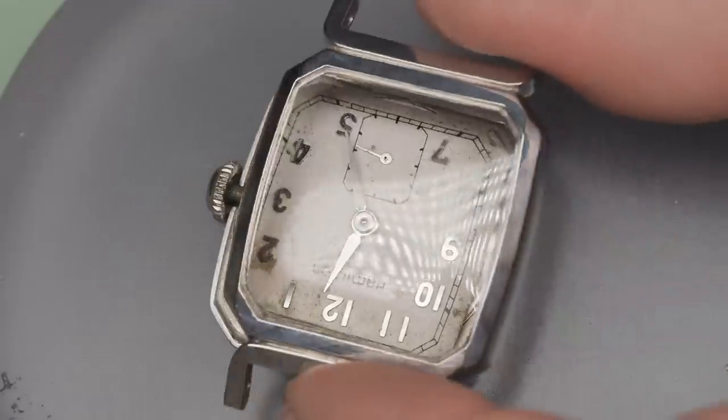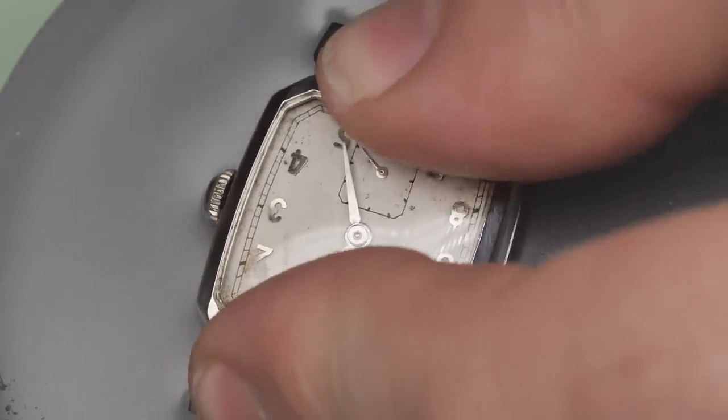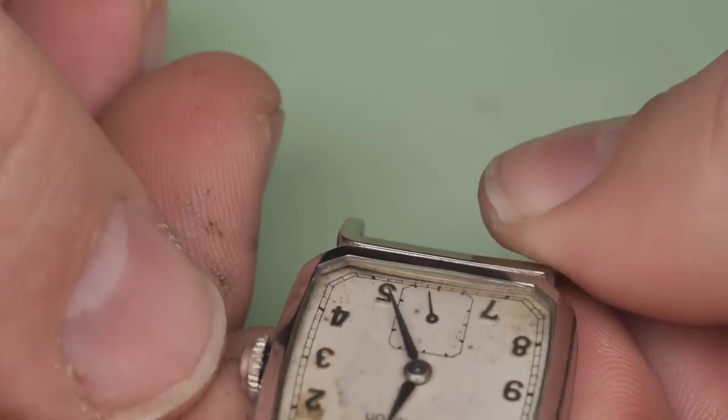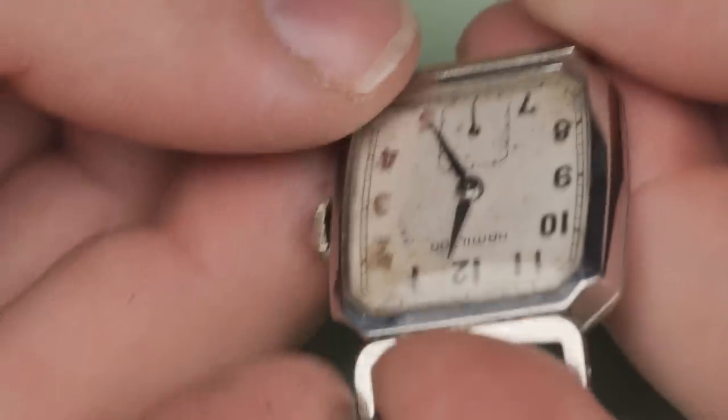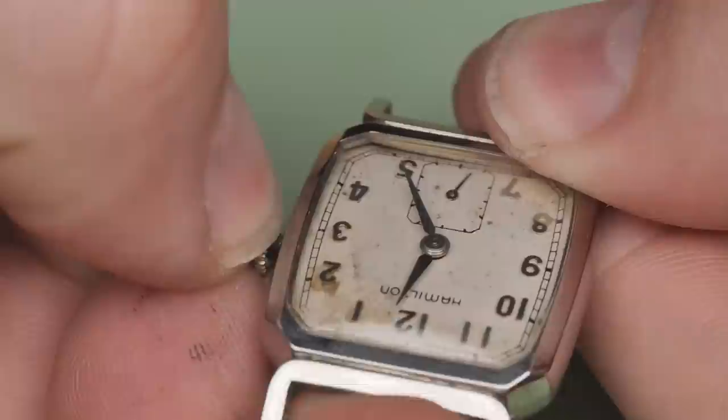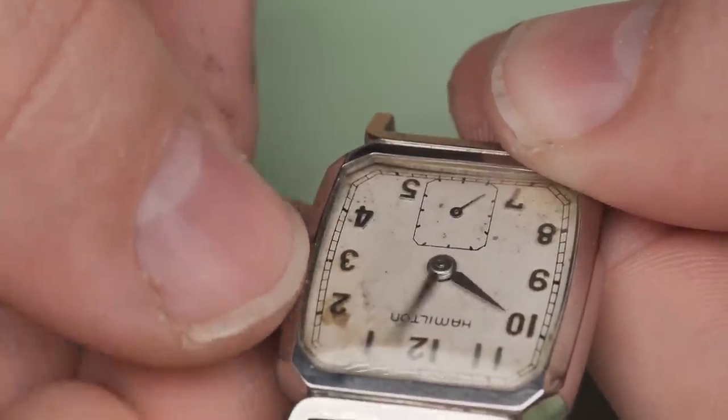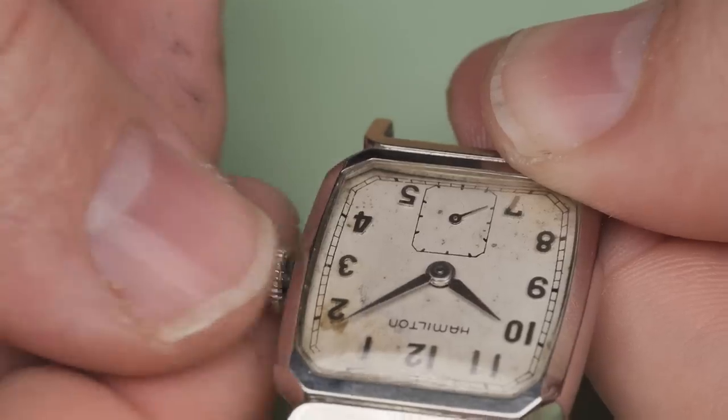The crystal adhesive is fully cured and I can now finish casing this beauty up. The caliber 747 was first introduced in 1947. Hamilton added shock protection to the movement in 1955 and changed the caliber number to 730. When an improved balance was added sometime in the mid-60s, the caliber number was again updated, this time to 731. All told, the 747 family of movements was in production for some 20 odd years.